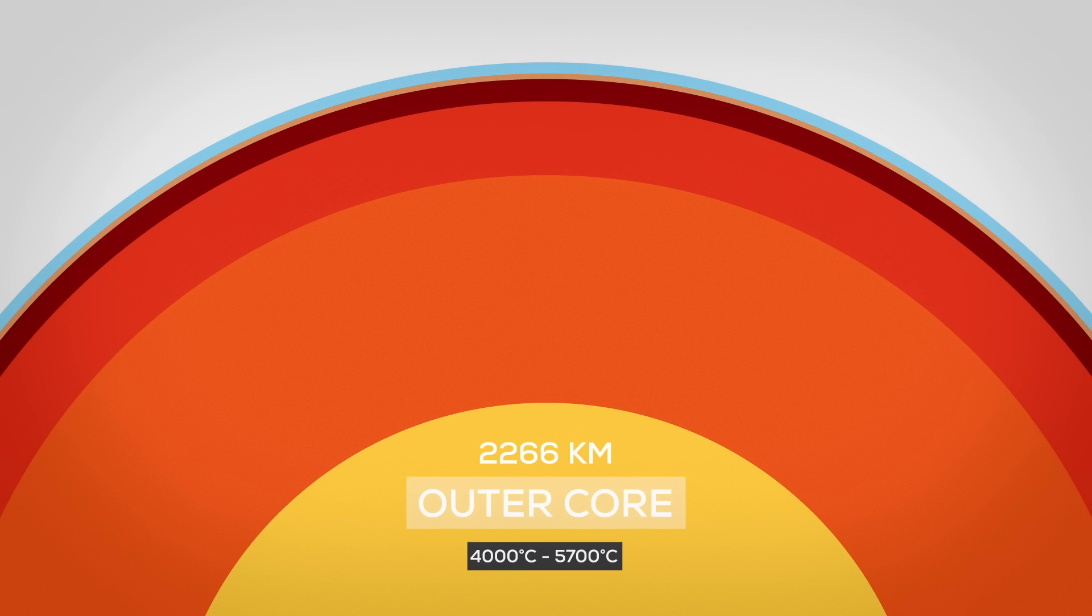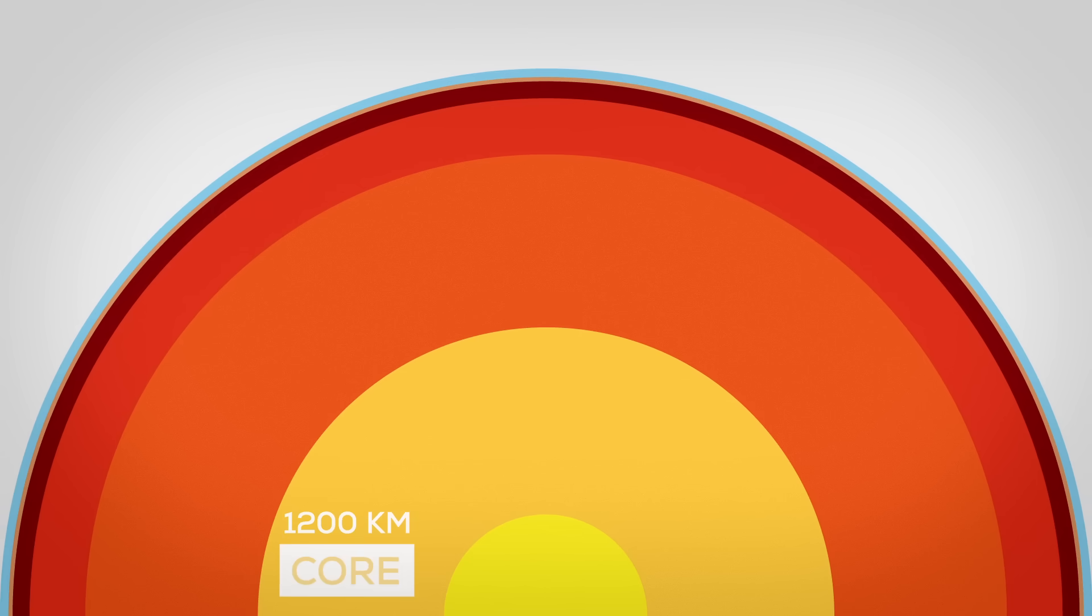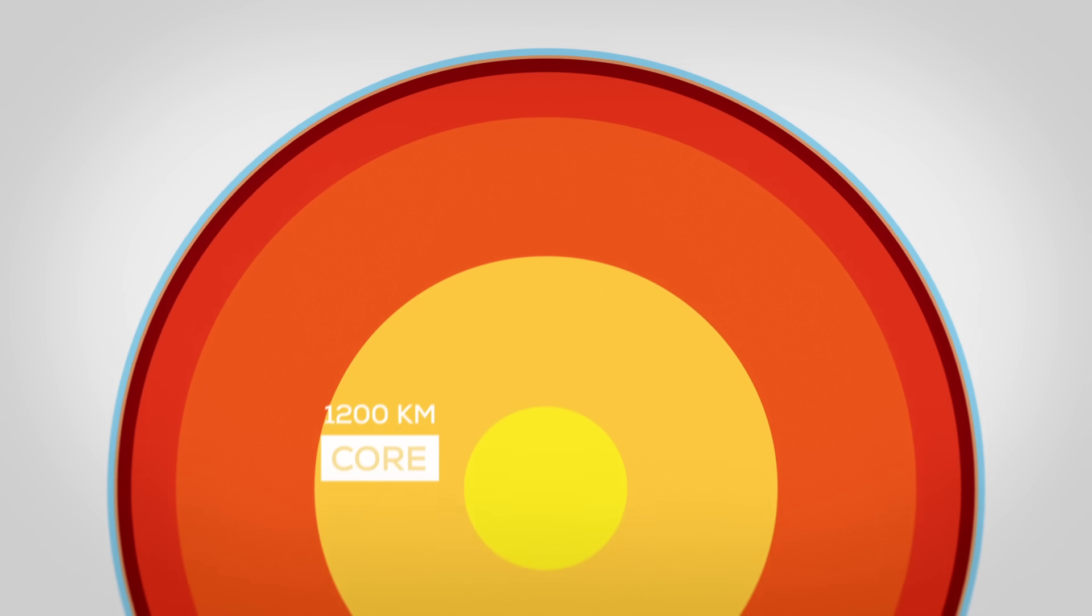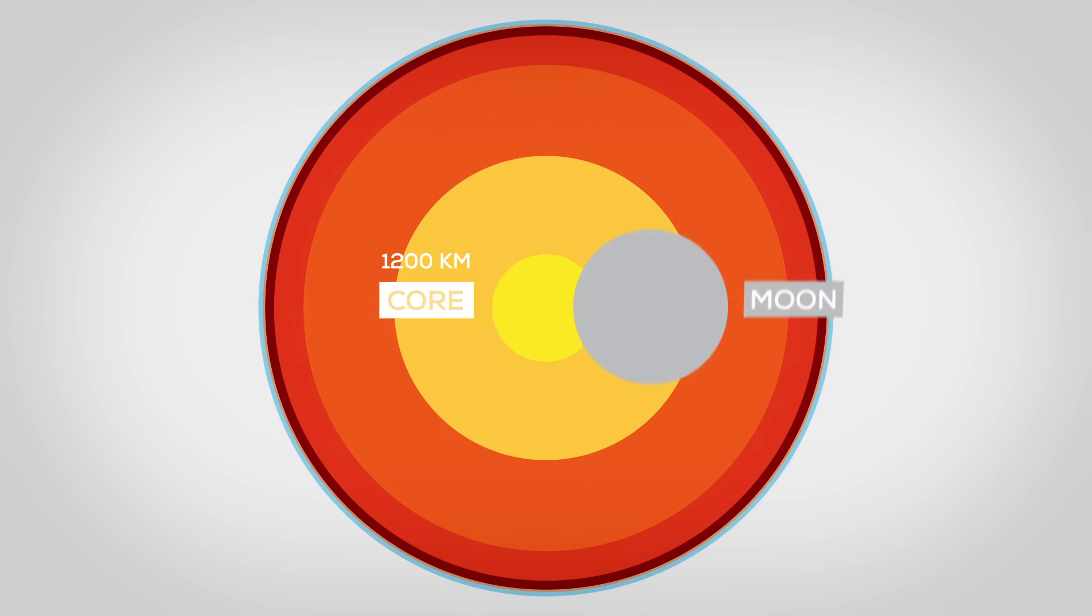Earth's outer core is a liquid layer of iron and nickel about 2,266 km thick. Temperatures vary from 4,000 degrees Celsius to 5,700 degrees Celsius. And in the center is the inner core. It's mostly solid, a ball made of an iron-nickel alloy, with a radius of about 1,200 km, 70% the size of the Moon and about the temperature of the surface of the Sun. It is slowly growing at an estimated rate of about 1 mm per year.